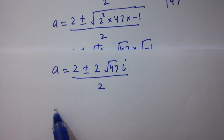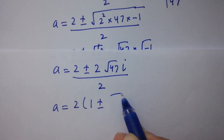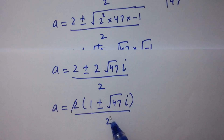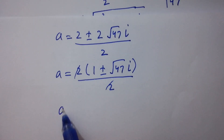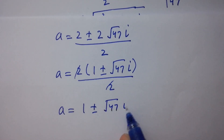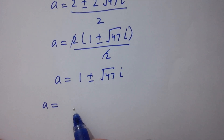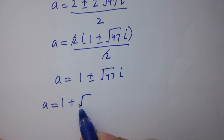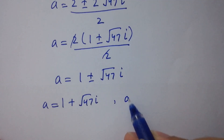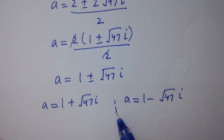Taking out the common factor 2, we get a equal to 2 times (1 plus or minus square root of 47 times i) over 2. The 2's cancel, giving a equal to 1 plus or minus square root of 47 i. So a equal to 1 plus square root of 47 i, or a equal to 1 minus square root of 47 i.